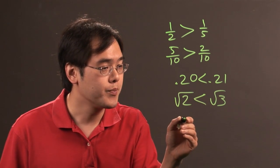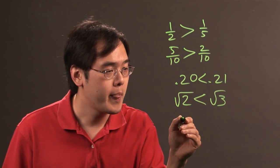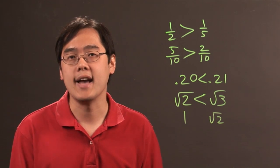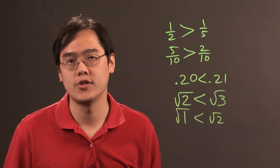Now, when it comes to comparing unlike real numbers, for example, if you have one and square root of two, you can think of one as a radical. One is the square root of one, and that's going to be less than the square root of two.